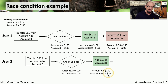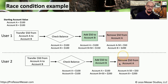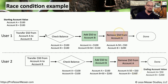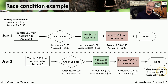Account B is at $200 because of the additional $50 added by user 2. Now user 2 performs the same $50 removal from account A. User 2 performed a check balance and saw account A was $100 but has not performed another check balance, so it doesn't know $50 has already been removed. It thinks account A has $100, removes $50, taking it down to $50. Both sides transferred $50 from account A to account B, but the ending values are account A at $50 and account B at $200.